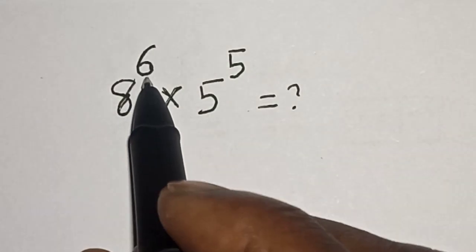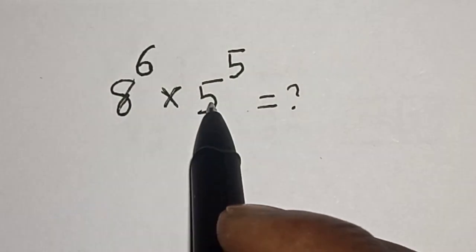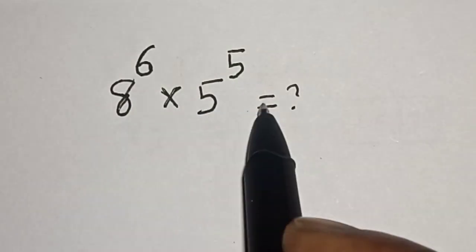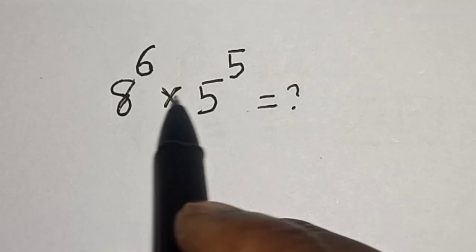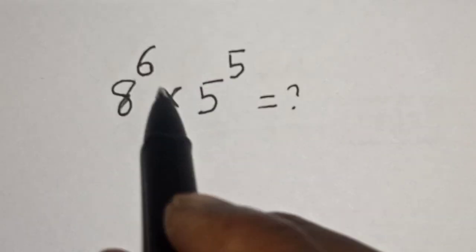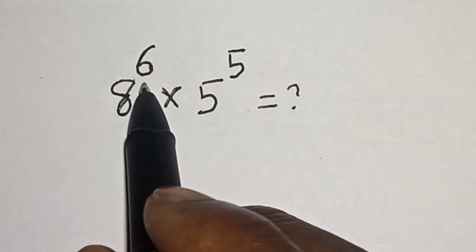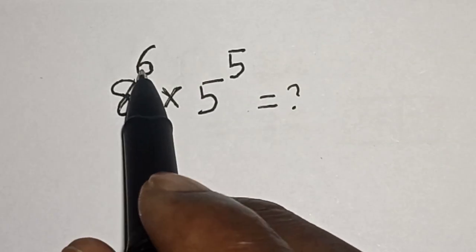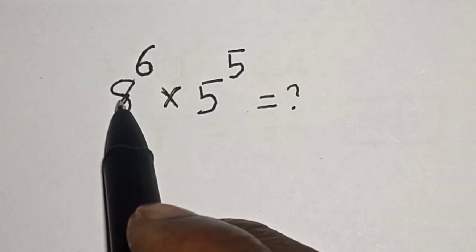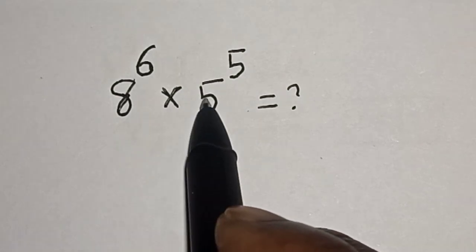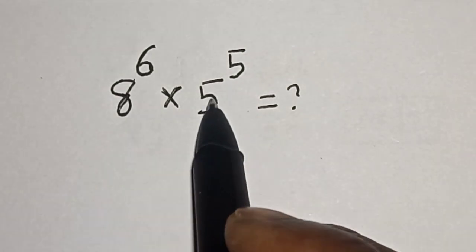8 raised to power 6 multiplied by 5 raised to power 5 is equal to what? Hi everyone, welcome to my class. In this class we want to evaluate this math problem: 8 raised to power 6 multiplied by 5 raised to power 5.